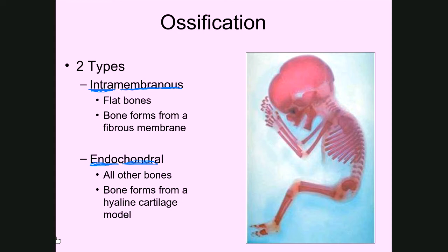One thing you should know about ossification is that when we say flat bones are formed primarily from intramembranous ossification and long bones primarily from endochondral ossification, it's not as cut and dried or black and white as that. The clavicles are a good example: they are flat bones formed primarily through intramembranous ossification, but there's also some endochondral ossification that happens within them as well.